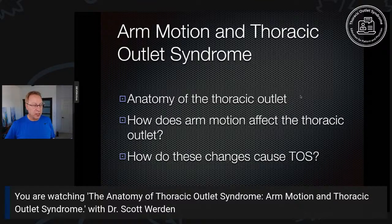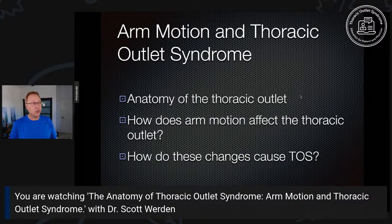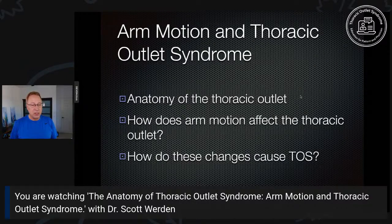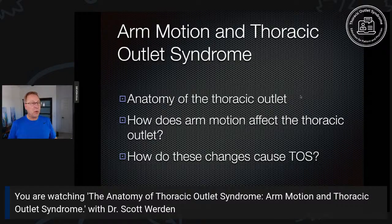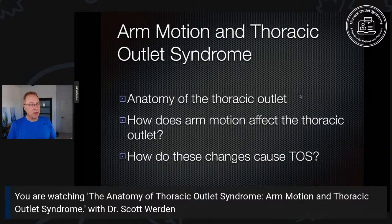It's very important to know this material. TOS is a form of entrapment neuropathy — we get these all over the body. Carpal tunnel syndrome is one you've probably heard of. But the thoracic outlet and TOS are unique because arm motion creates a really complex extra factor that doesn't just entrap the nerve, but can do it in many different ways, depending on the person, their anatomy, their musculature, etc.